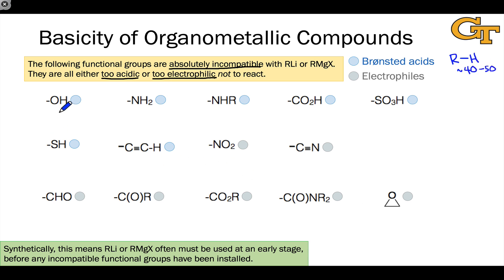These would be things like OH, with a pKa of 15, NH2, pKa of 35, NHR, similar territory. A carboxylic acid, absolutely incompatible with an organolithium or Grignard. A sulfonic acid, these can be right down around zero. So all of these pKa's are far too low to be compatible with R-, the conjugate base of a hydrocarbon.